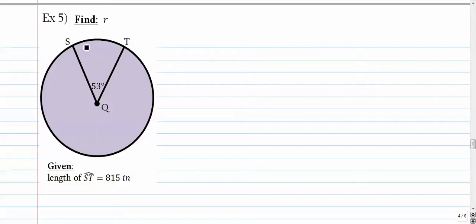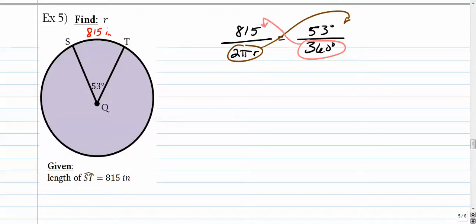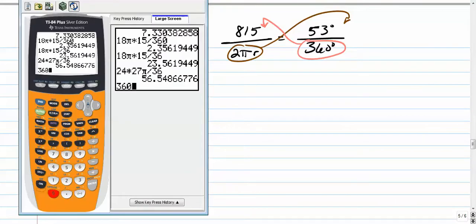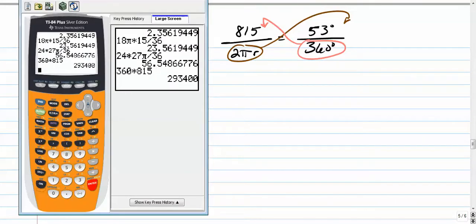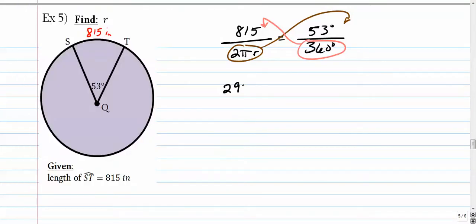All right, a couple more here. Number five, let me go backwards this time. We're given the length of the arc. I'll put it in red. The length of the arc is 815 inches, and we're trying to find the radius. So here we go, set up a proportion. 815 is what we're given, 2πr is down here, 53 is the angle, 360 is the whole circle. So here we go, let's take a little cross multiplication here. That goes up here, and then we'll take the 360 and bring it up here. So we have 360 times 815: 293,400. And we're going to go 2πr times 53.